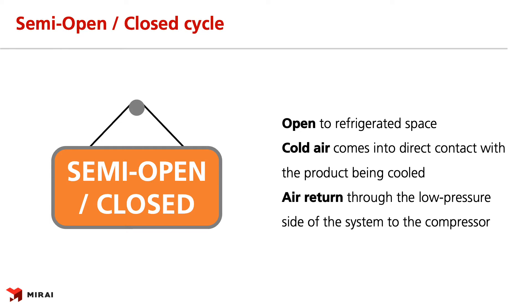Semi-open cycle has the same refrigeration principle as the open cycle, which means that air is distributed directly to the cold chamber and products come into direct contact with the cold air. The key difference is that air is not discharged to the atmosphere after the recuperator, and fresh air is not sucked into the compressor. Instead, air recirculates from the recuperator back to the compressor, closing the loop, and then goes to the cold chamber repeatedly.